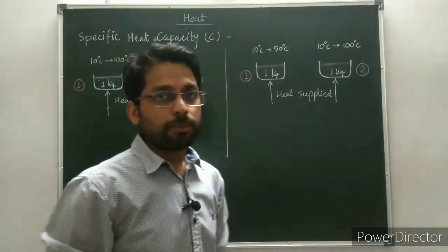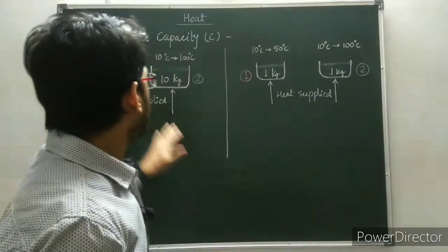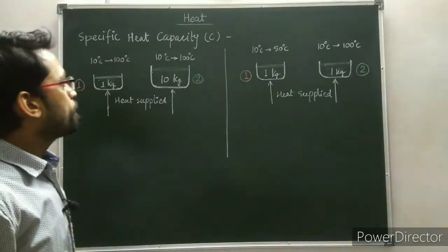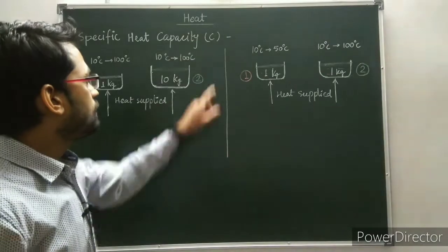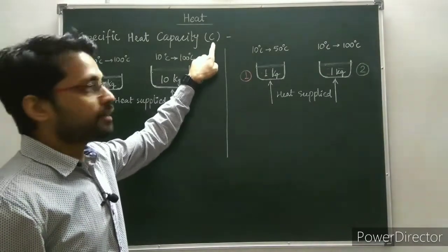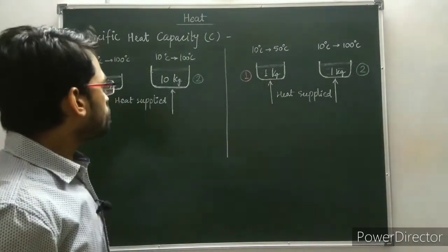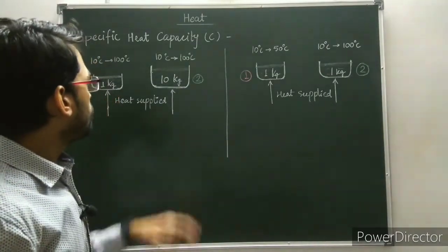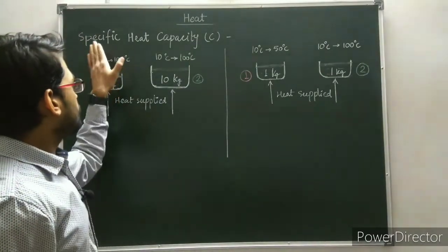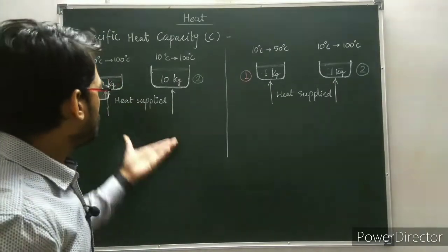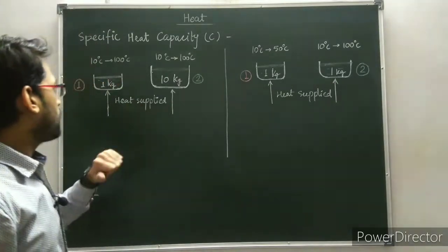Now, we come to the next topic, that is specific heat capacity, denoted by C. To understand specific heat capacity, consider this diagram.